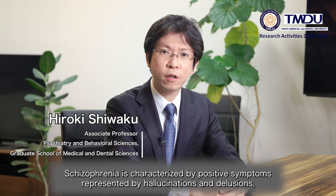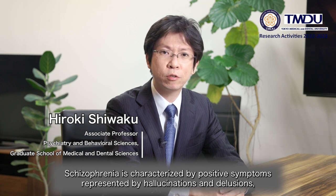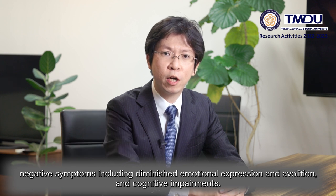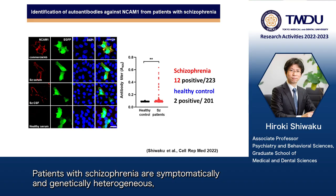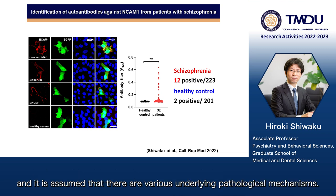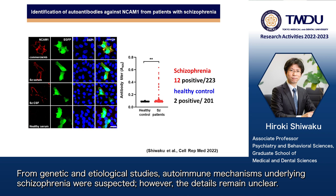Schizophrenia is characterized by positive symptoms represented by hallucinations and delusions, negative symptoms including diminished emotional expression and avolition, and cognitive impairments. Patients with schizophrenia are symptomatically and genetically heterogeneous, and it is assumed that there are various underlying pathological mechanisms. From genetic and histological studies, autoimmune mechanisms underlying schizophrenia were suspected; however, the details remain unclear.